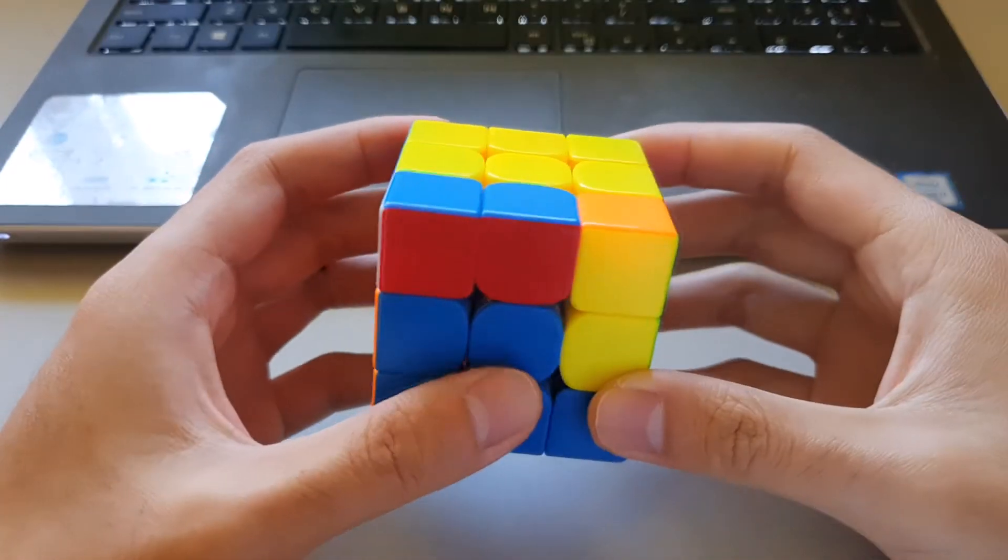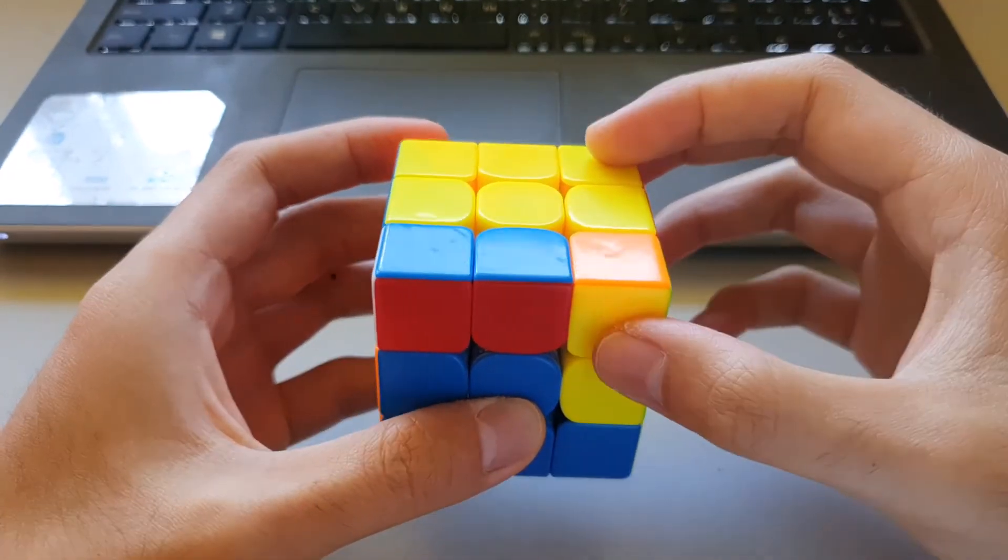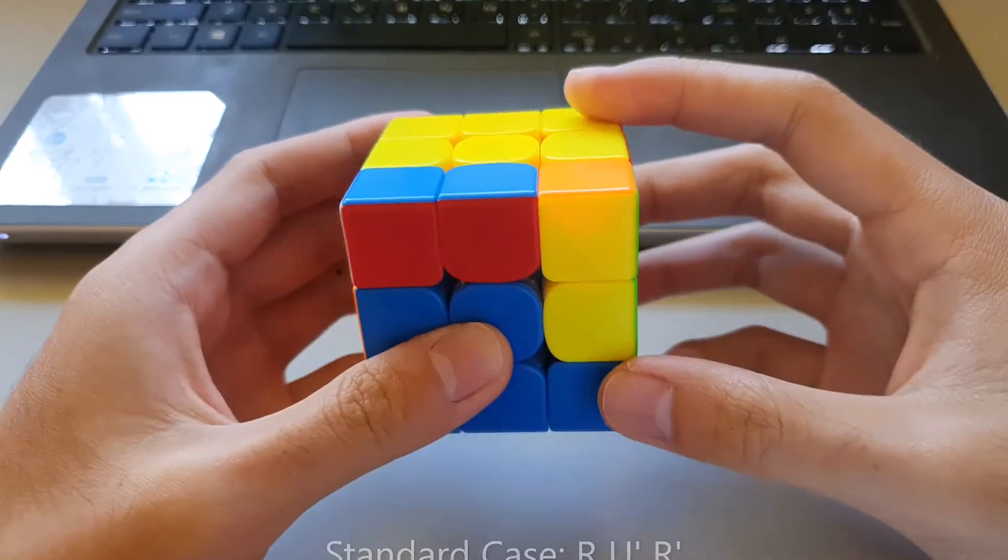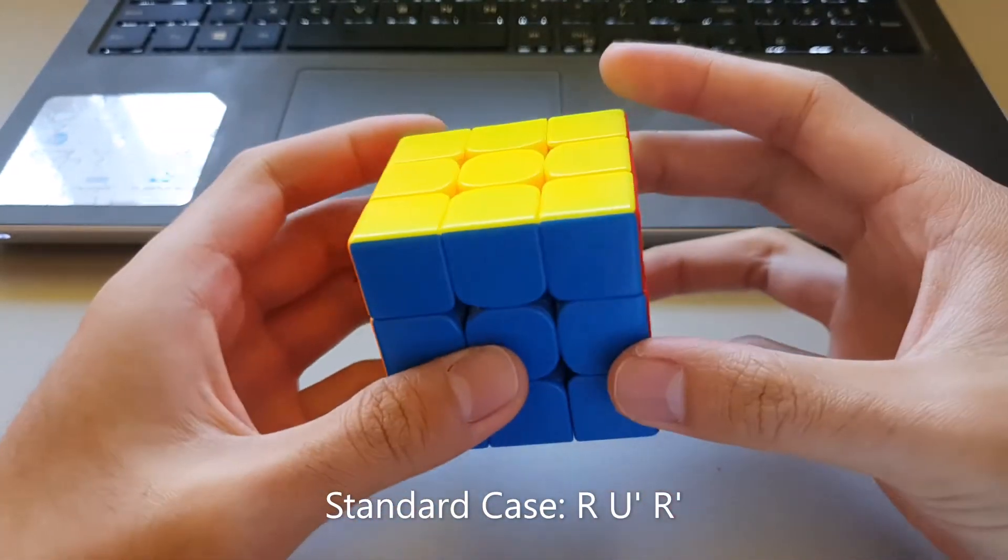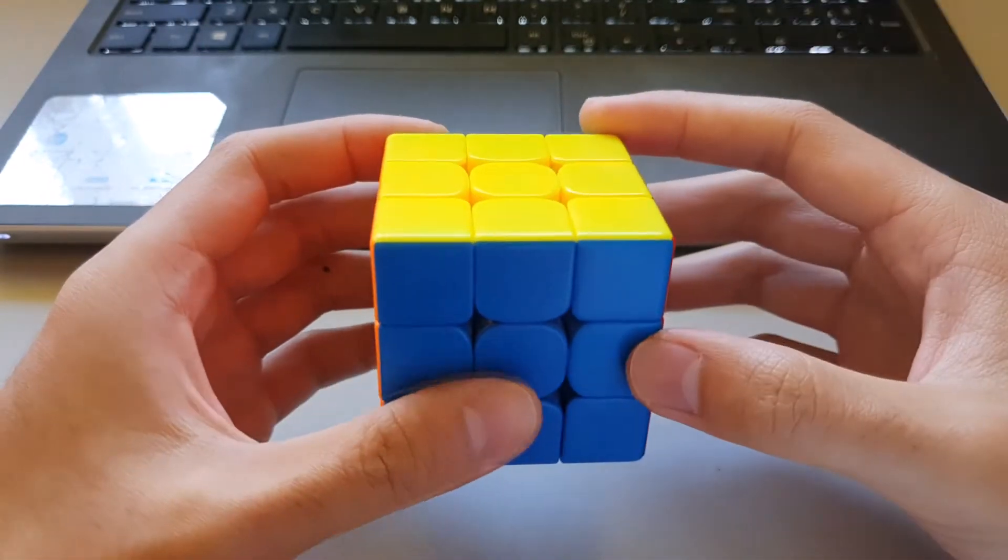So starting off with this case here, it's when you have the rectangle at the back and this corner sticker here at the front facing towards you. So it's actually a really easy case. This is when you insert regularly and you get the OLLL skip. So it's a pretty trivial case but I thought it was worth mentioning.